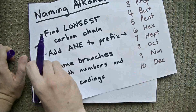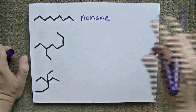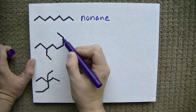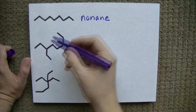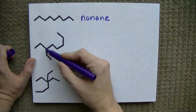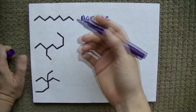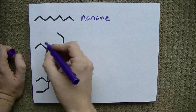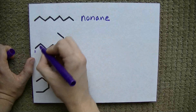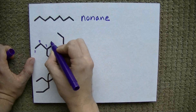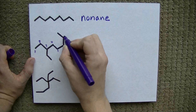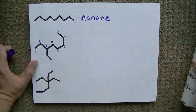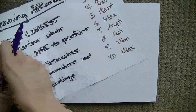New molecule. Find the longest carbon chain and add "-ane" to the prefix. One, two, three, four, five, six, seven, eight. And counting the other way: one, two, three, four, five, six, seven, eight. It's eight in either direction, so let's go one, two, three, four, five, six, seven, and eight. Eight is octane.